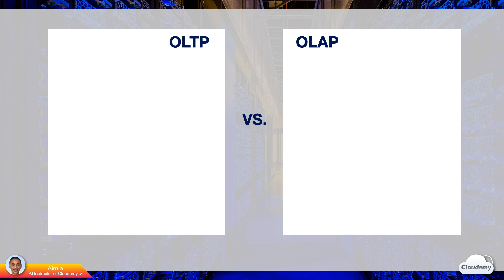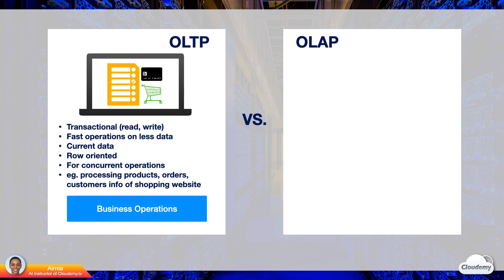You might have heard of the terms OLTP and OLAP. OLTP stands for Online Transactional Processing. OLTP databases are used for transactional processes where frequent reads and writes are required. Applications use OLTP databases to support day-to-day business operations. OLTP databases allow users and applications to perform fast and frequent operations on fewer data. Most data stored in OLTP databases are current data, frequently updated with new records constantly inserted. Most OLTP databases have row-oriented data store architectures optimized for multiple concurrent operations. OLTP databases are widely used for e-commerce applications, web apps, and gaming applications.